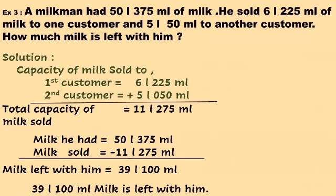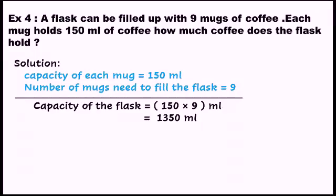Total milk sold is 11 liters 275 milliliters. The milk the milkman originally had, minus the total milk sold, gives us the milk remaining. After subtraction, the result is 39 liters 100 milliliters of milk left with him.